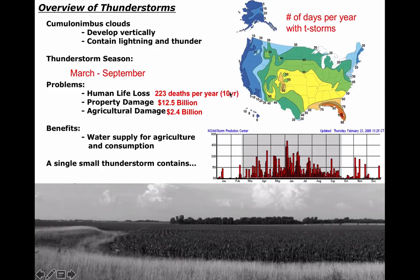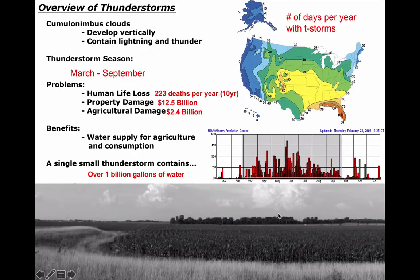As we continue to unpack the thunderstorm and how it works, don't forget this: a single small thunderstorm can contain over a billion gallons of water. Some of them contain tens of billions of gallons. They weigh millions of tons, these massive storms. But here's the question: if there's so much water contained in these thunderstorms, how in the world are they supported? What holds them up there? What makes air rise?